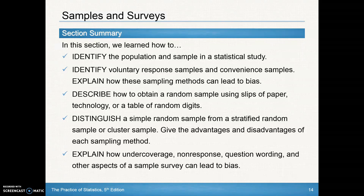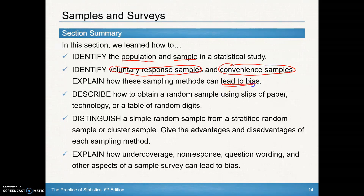Here's everything we should have learned through section 4.1. Make sure you know the difference and can identify a population and a sample in a study. You should know about a voluntary response sample, as well as a convenience sample, being bad — they lead to bias. You should know how to obtain a random sample.